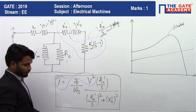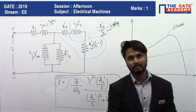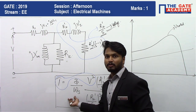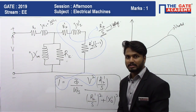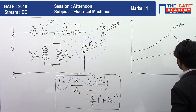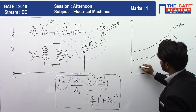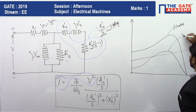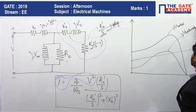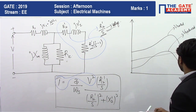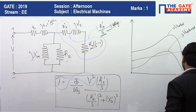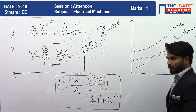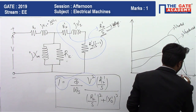If we decrease the voltage, torque decreases. The synchronous speed is purely dependent on frequency and remains the same. So when voltage is reduced, the torque-speed characteristic shifts downward. The new operating point moves such that the rotor speed decreases. Previously the rotor speed was Nr; now it becomes Nr dash, which is lower. The slip, which is the difference between synchronous speed and rotor speed, has now increased.